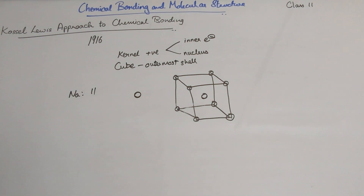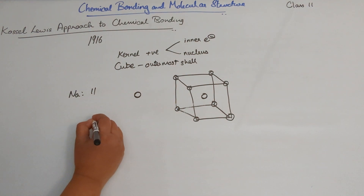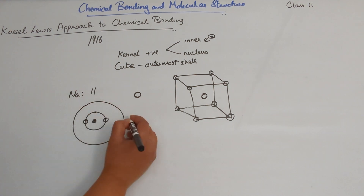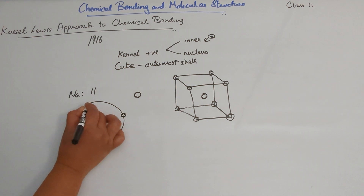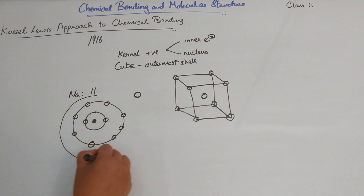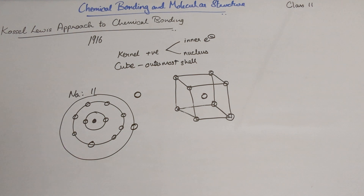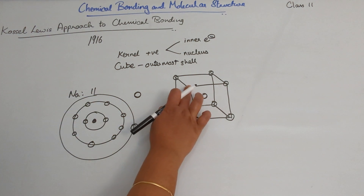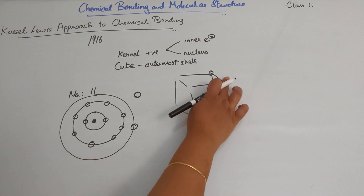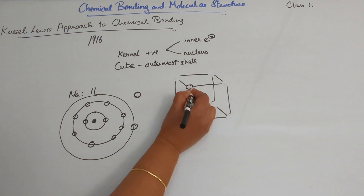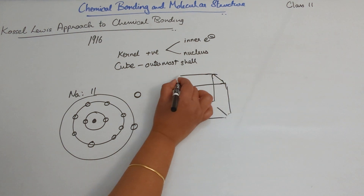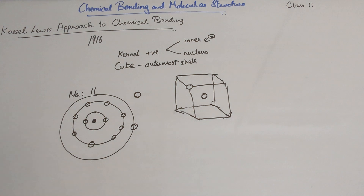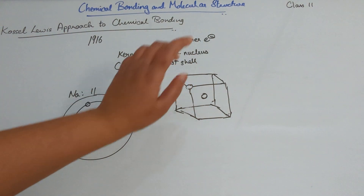Let's take sodium as an example. Sodium's atomic number is 11. Using Bohr's model, you have two electrons in the first shell, eight electrons in the second shell, and just one electron in the third shell. According to Lewis, everything except that outermost electron is the kernel — so sodium has just one electron in its outermost shell.